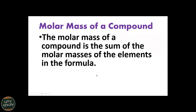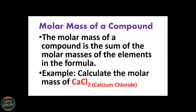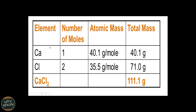In a compound, the molar mass is the sum of the molar masses of all elements in the formula. Each element has its own individual molar mass; for a compound where two or more elements are chemically bonded together, you simply add their total molar masses. For example, in calcium chloride (CaCl₂), we need one atom of calcium and two atoms of chlorine. Get their individual molar masses, then multiply chlorine's molar mass by two and add them together.